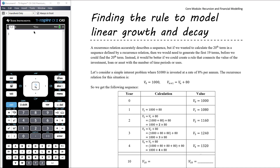In this video we're going to continue to look at models of linear growth and decay — that is simple interest investments and loans, and flat rate or unit cost depreciation. What we want to do is look at being able to come up with a rule to describe that, and make the distinction between the recurrence relation and the rule.